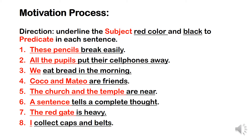Fourth: 'Coco and Matteo are friends.' Coco and Matteo is our subject, underlined with red. Are friends is our predicate, underlined with black. Fifth: 'the church and the temple are near.' Church and temple is the subject. Are near is the predicate. Sixth: 'a sentence tells a complete thought.' A sentence is our subject, and tells a complete thought is our predicate. Seventh: 'the red gate is heavy.' The red gate is our subject, and is heavy is the predicate. Eighth: 'I collect caps and belt.' I is the subject, and collect caps and belt is our predicate.